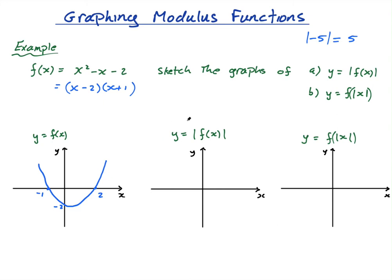To draw mod f of x, the key point is there cannot be any negative y-values, because we're inside the modulus sign. Whatever we put into f, the output must be positive. So these negative values — the parts underneath the x-axis — become positive. The negative 2 becomes 2.